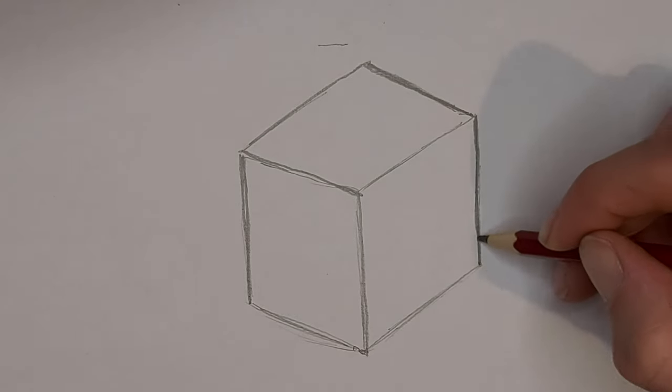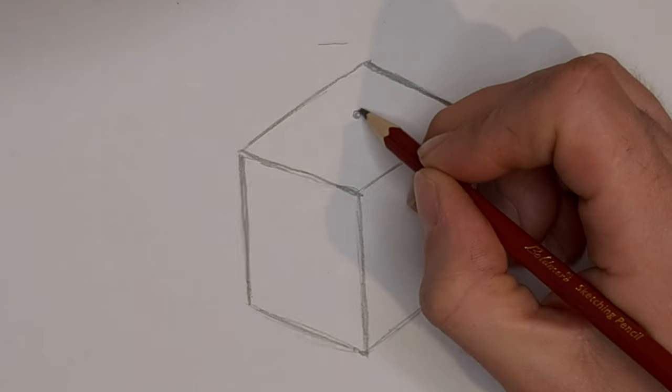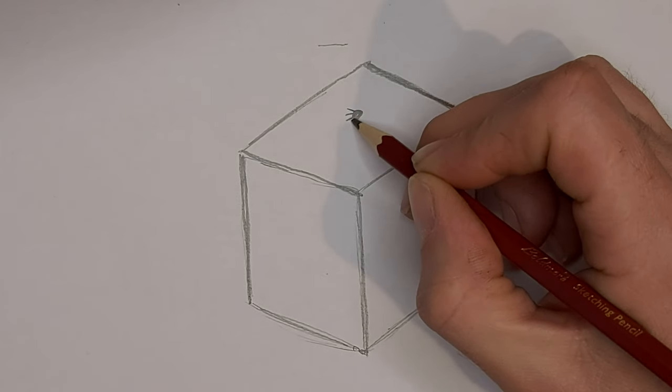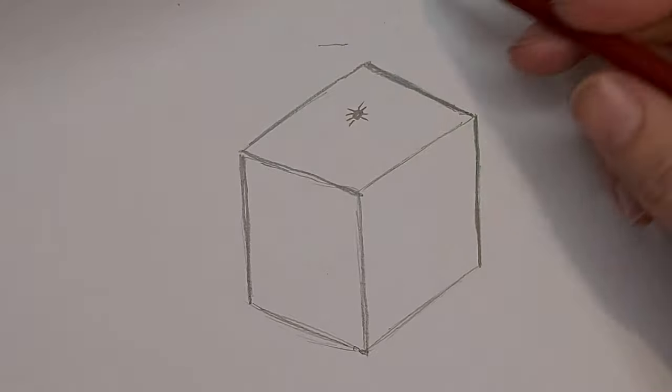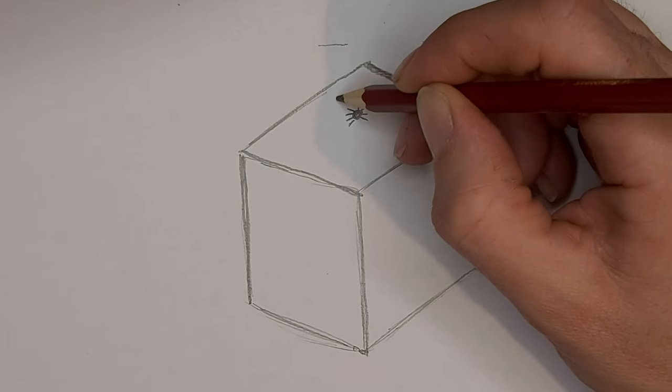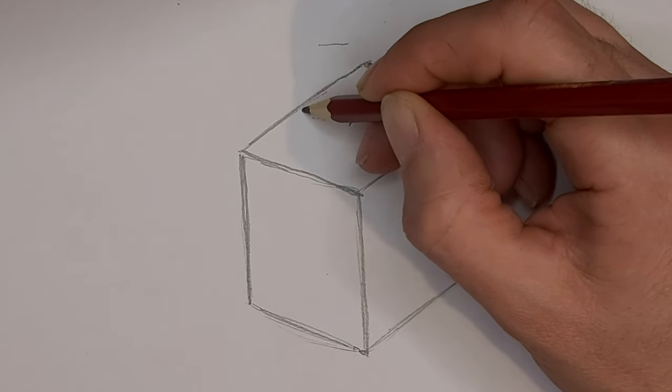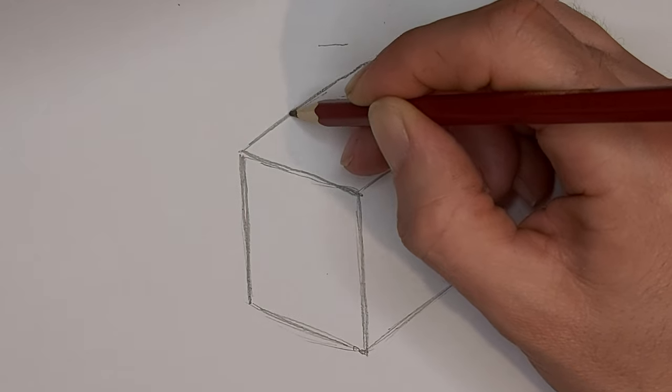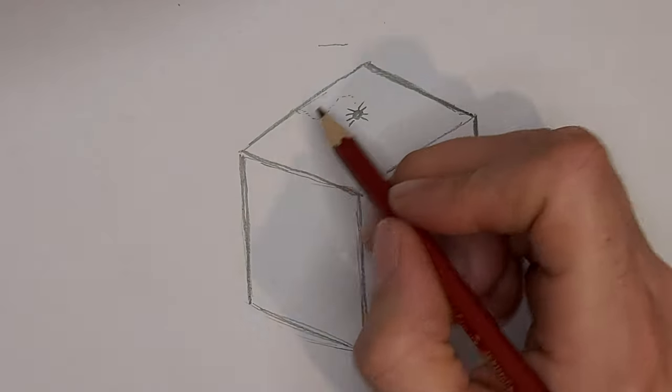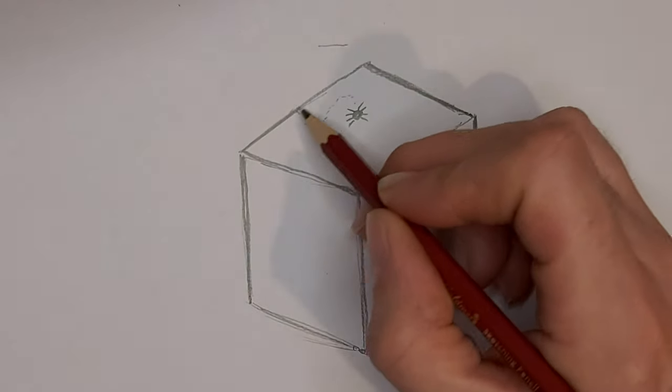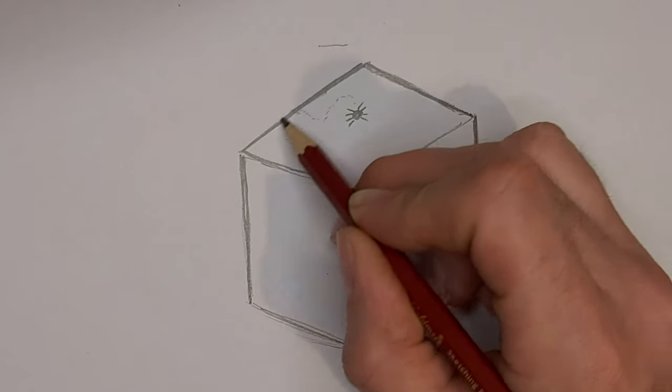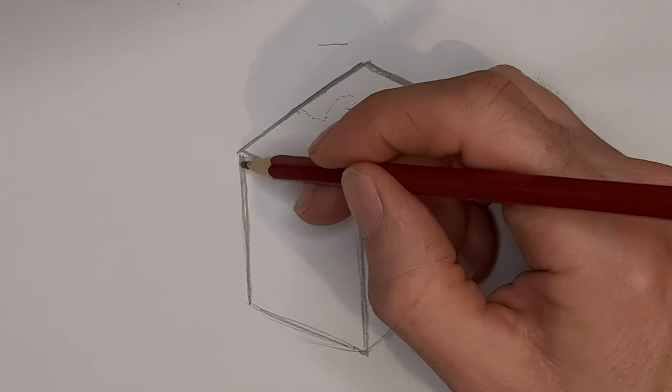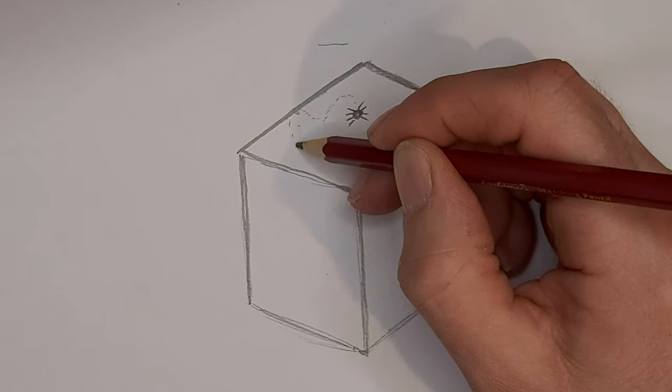Use thick lines. Remember, imagine there's a spider on here. That spider crawling around, and he goes over an edge or over a line and you can no longer see that spider, then that will become a thick line. If he's crawling around and he goes over this line, you can still see the spider.